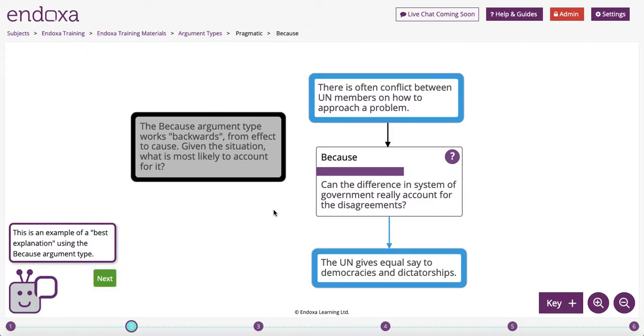The because argument type takes one or more premises. Because works backwards from an effect to a cause. In this case, we're saying that there's often conflict between the United Nations members, because the United Nations gives equal say to democracies and dictatorships.